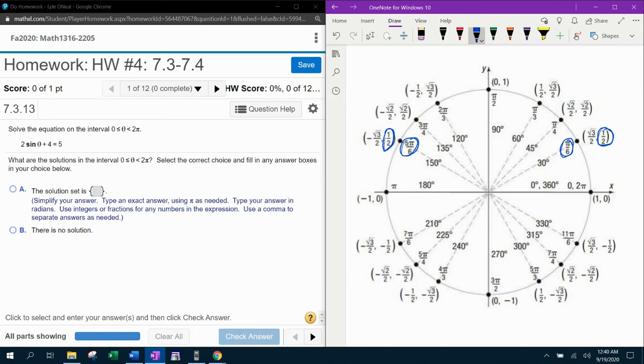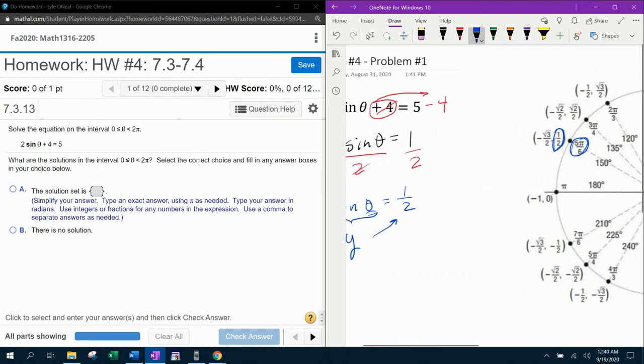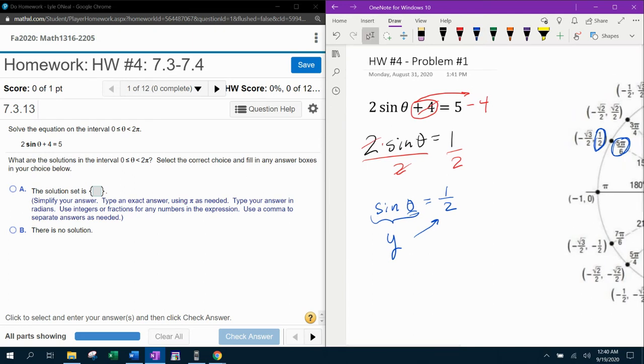So there are going to be two solutions to this equation. Two angles that satisfy the condition. So theta will be pi over six and five pi over six.